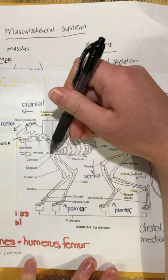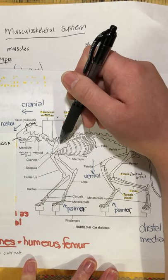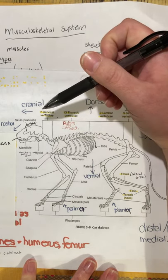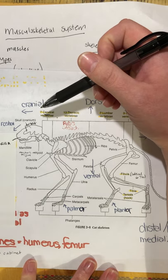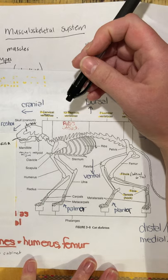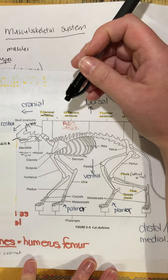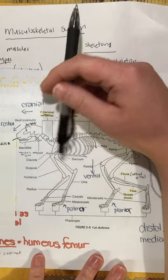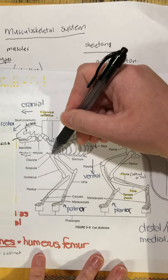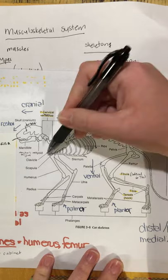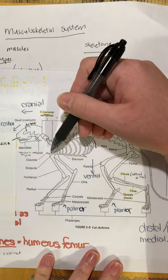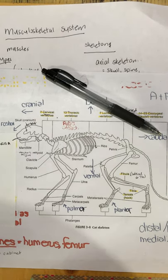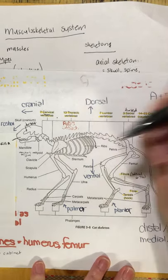One bone I skipped over is the clavicle — the collarbone. It's not part of the appendicular skeleton even though it looks like it is. Humans and cats have collarbones, but dogs do not have a clavicle. Having that bone allows us to bring our arms together for a hug — dogs can't really do that, but cats can because they have a clavicle.